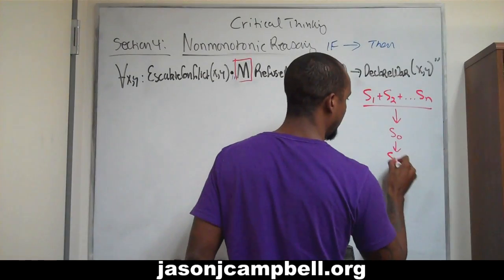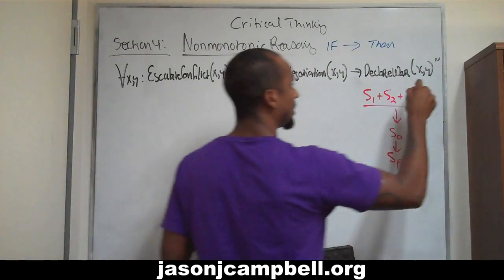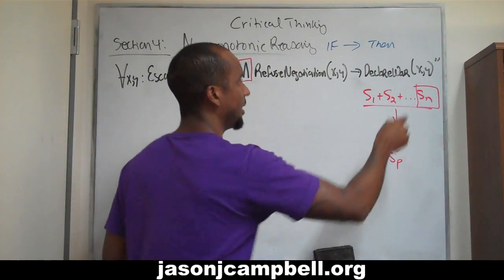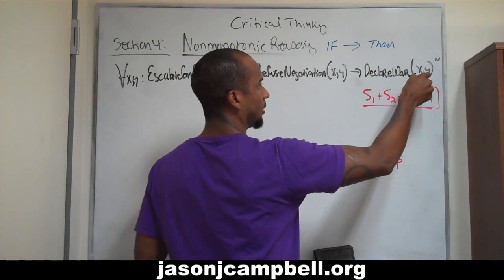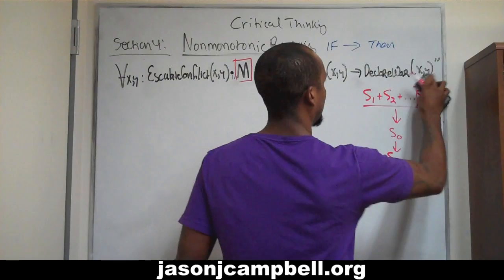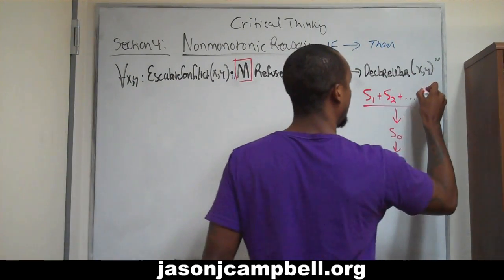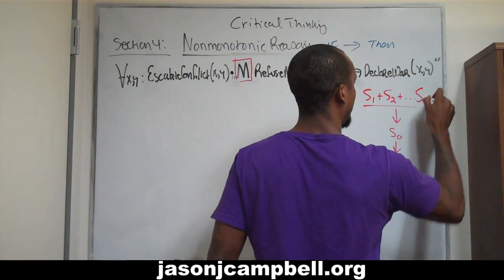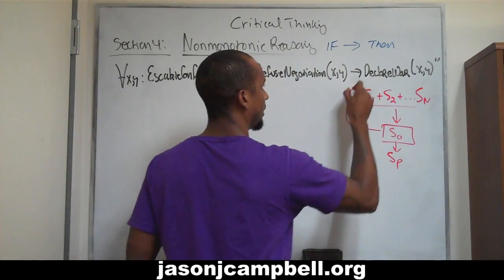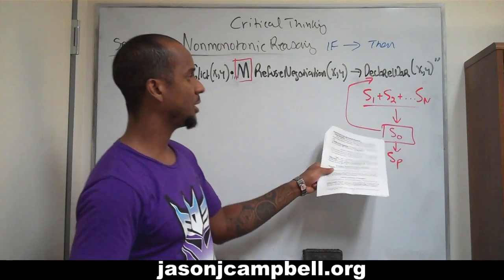This is the form we're going to take. Sn — all of that — leads to this; S-O is the conclusion. Our conclusion is that. And then we realize from our conclusion we're able to derive another conclusion.